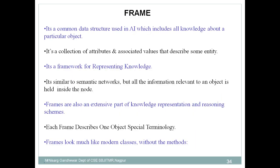Frame is a common data structure used in AI which includes all knowledge about a particular object. It includes a collection of attributes along with associated values, used to represent a particular entity — you can say object or instance. It possesses a set of attributes and associated values. Frame is a framework for representing knowledge, somehow similar to an object and similar to semantic network, but all information relevant to an object is held inside a particular node.